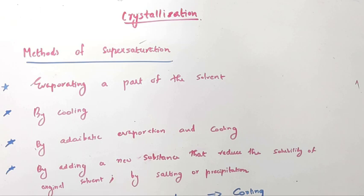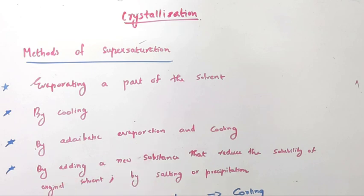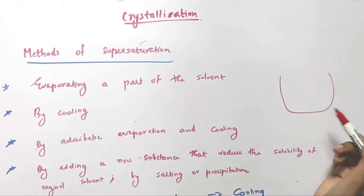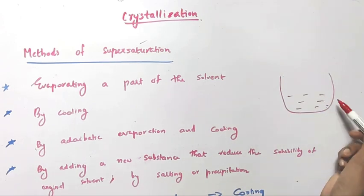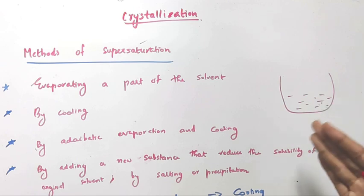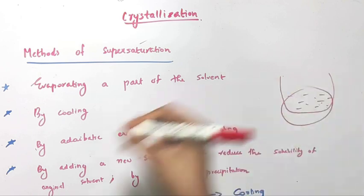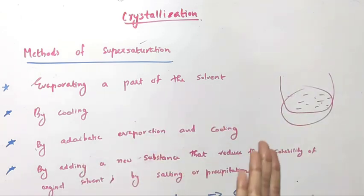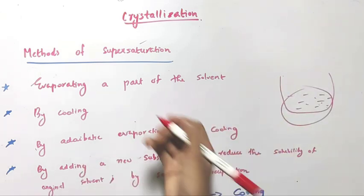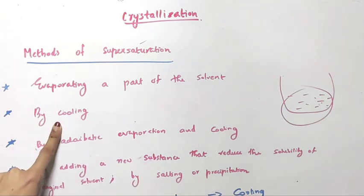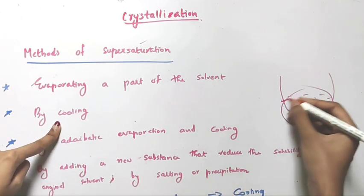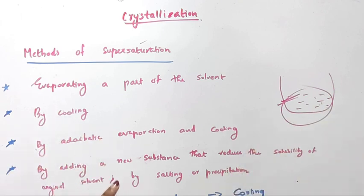For crystallization to take place, supersaturation is necessary. So how can we attain supersaturation? The first method is by evaporating a part of the solvent. By evaporating part of the solvent we are reducing the amount of solvent, thereby increasing the concentration of our solution and disturbing the equilibrium. When the equilibrium is disturbed, supersaturation is achieved. The second method is by cooling — we can cool the solution to convert it into a supersaturated solution.